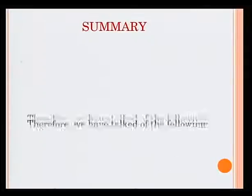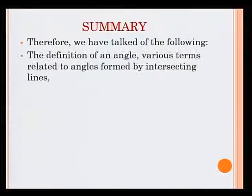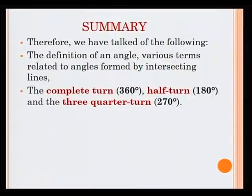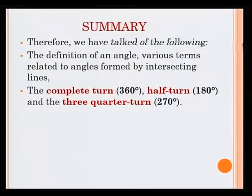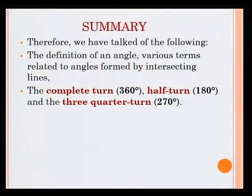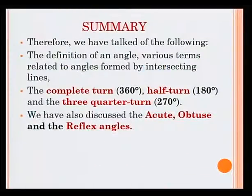Let's have a look at what we have learned today. The definition of an angle — angles are formed by intersecting lines. The complete turn, which is 360 degrees; half turn, 180 degrees; and the three-quarter turn, which is 270 degrees. We have also discussed the acute, obtuse and the reflex angles.